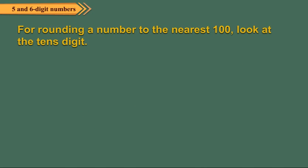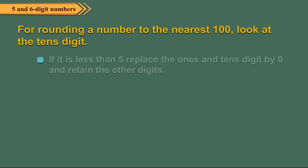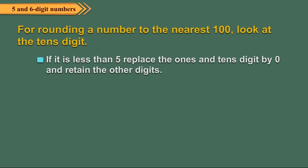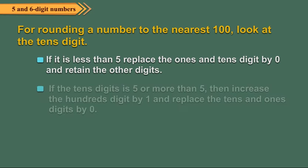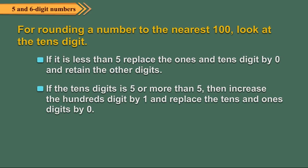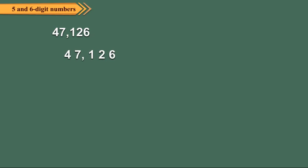For rounding a number to the nearest hundred, we look at the tens digit. If it is less than 5, replace the ones and tens digits by 0 and retain the other digits. If the tens digit is 5 or more, increase the hundreds digit by 1 and replace the tens and ones digits by 0. Let us round off 47126 to the nearest hundred.